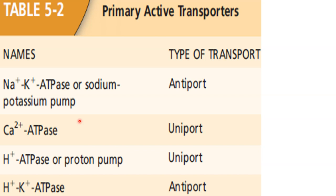Examples of ATPases: sodium-potassium ATPase transports two molecules — sodium and potassium — in opposite directions, so it is called antiport. Calcium ATPase transports only calcium — called uniport. Hydrogen-potassium ATPase (proton pump) transports two molecules in opposite directions — also antiport. When two molecules go in opposite directions, it is antiport; when in the same direction, it is called symport.